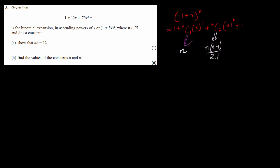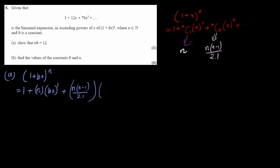Since in this particular question n is unknown and we have to find n, we use this rule where instead of nC1 we write n, and instead of nC2 we write n(n-1) over 2. So for the expansion of (1+bx)^n, we write 1 plus n·(bx) plus n(n-1)/2 · (bx)².